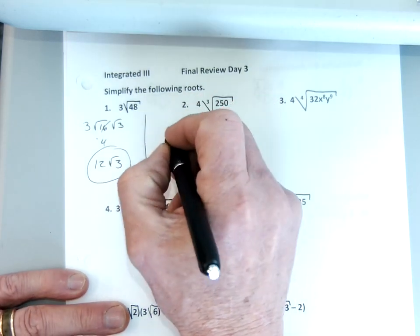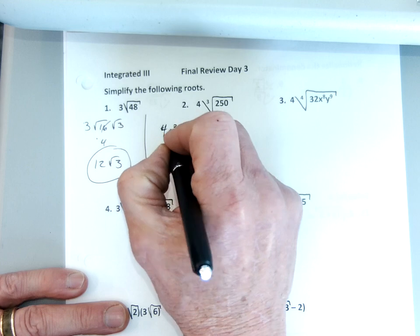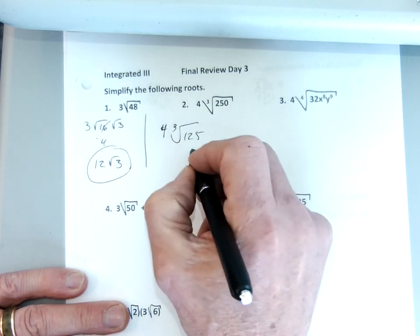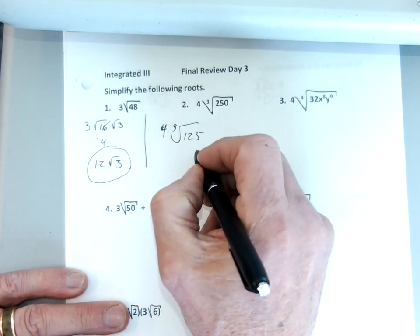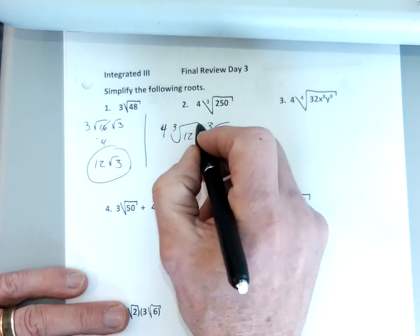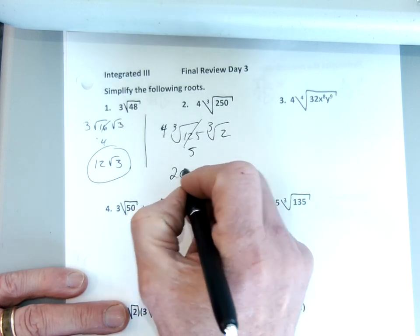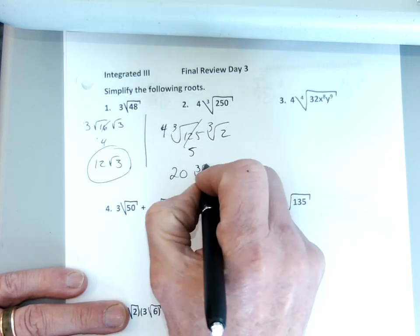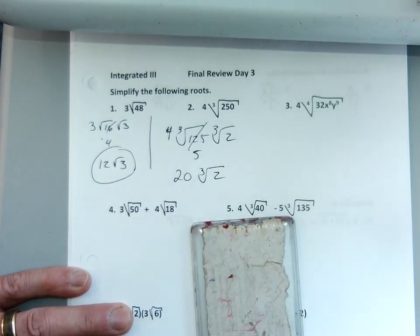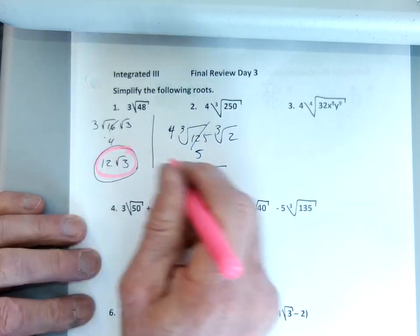Number two is a cube root. I'm going to leave the 4 here, but 125 has a perfect cube root — it's going to be 5. So I've got 125 times the cube root of 2. I know the cube root of 125 is 5. 5 times 4 is 20, so I've got 20 times the cube root of 2.